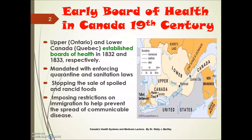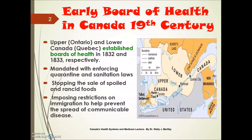They also imposed restrictions on immigration to help prevent the spread of communicable diseases. The British North American Act was passed in 1867, and this is really the first legislation to describe the jurisdictions and responsibilities of the federal and provincial governments for providing health care services. The BNA Act was renamed the Constitution Act in 1982.